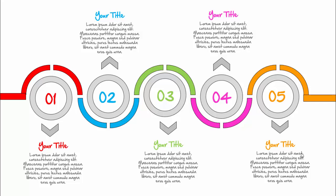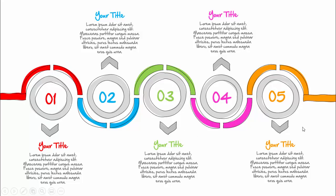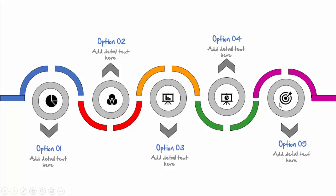In today's tutorial I'm going to show you how to create a five circle options infographic slide in PowerPoint. This is how the slide looks — I've added five circles with different color combinations in a zigzag arrangement, with option one through five each having a title and detailed text. I've also made one more slide using the sketch feature, and another slide with added icons.